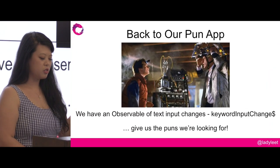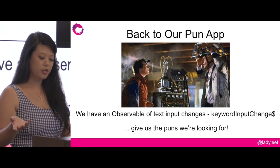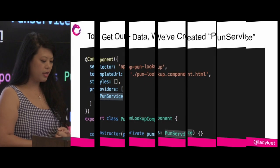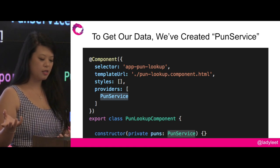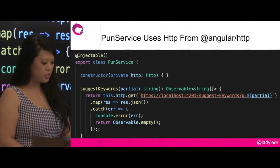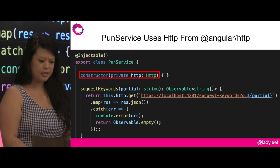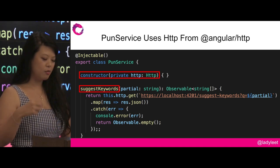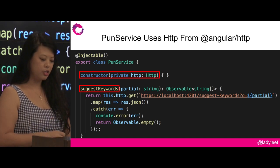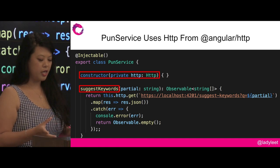Now that we've created an observable of text input changes called keyword input changes, we want to compose this into an observable of keywords. We've added a service called the pun service using the CLI. The pun service uses Angular's HTTP service, injected through the constructor, and has two methods: suggest keywords and get puns. The suggest keywords method does a GET request with the typed string to find matching keywords. The HTTP service returns observables, and then we map the result to response.json to get an actual JavaScript object — in this case, an array of strings.